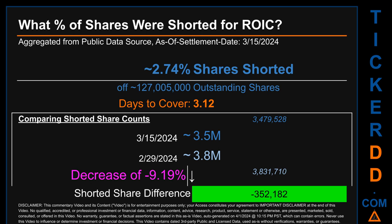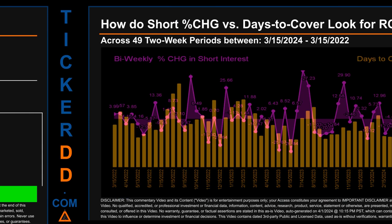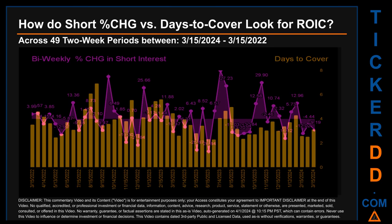Zooming out, I looked across 49 two-week snapshots from the latest found March 15, 2024, to oldest found March 15, 2022. The graph overlays bi-weekly percentage change in short interest against days to cover across these 49 snapshots. The average percentage change of short interest was about 0.68. The largest percentage increase in short interest was 39.90. The largest percentage decrease was minus 26.84, occurring once on June 15, 2023. The average days to cover was about 3.76. The biggest days to cover was 6.93, occurring once on August 31, 2022.